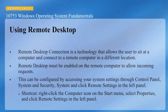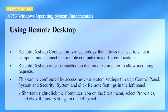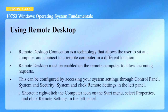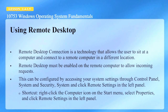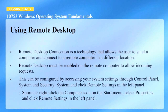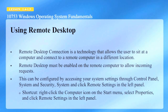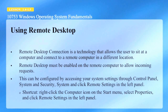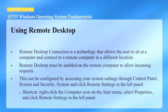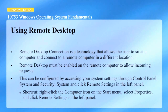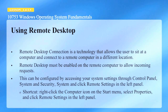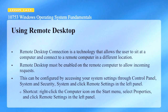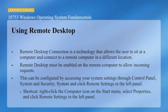Remote Desktop Connection is a technology that allows the user to sit at a computer and connect to a remote computer in a different location. Remote Desktop must be enabled on the remote computer to allow incoming requests. This can be configured by accessing system settings through the Control Panel, System and Security, System, and clicking Remote Settings in the left panel. There is a shortcut by right-clicking on the Computer icon on the Start menu, selecting Properties, and then selecting Remote Settings in the left panel.